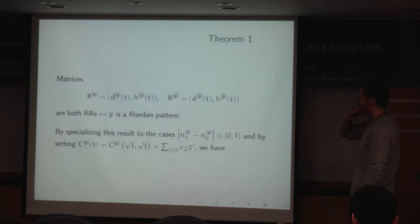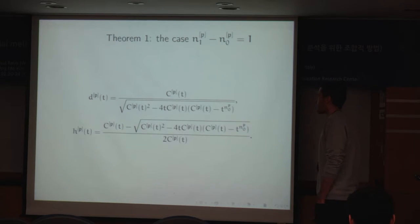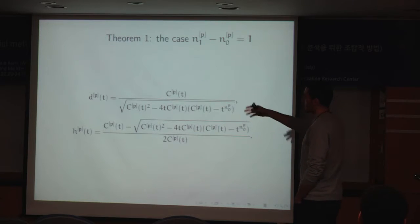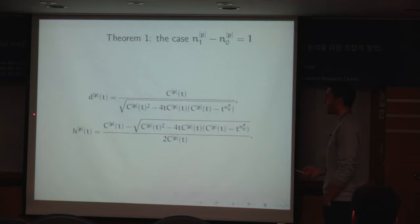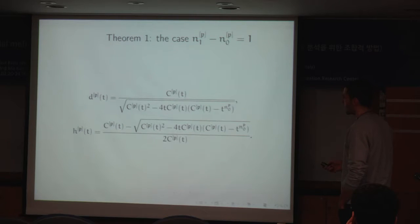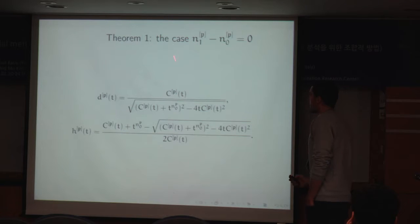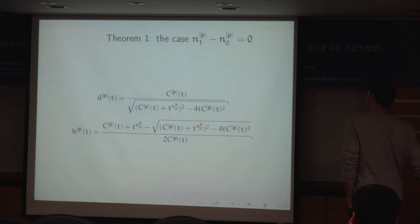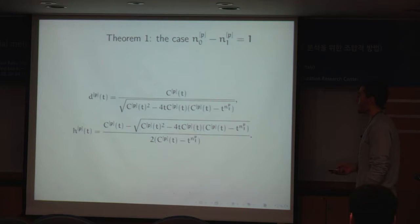We are now ready to state our first theorem, and we proceed by cases on the value of the difference. When there is one more bit 1 with respect to the number of bits 0 in the pattern, we can give explicit formulae for functions d and h, expressed in terms of the correlation polynomial. When the number of bits 1 equals the number of bits 0 in the pattern, we have these explicit definitions. And finally, when there is one more bit 0 with respect to the number of bits 1, we have these two definitions.